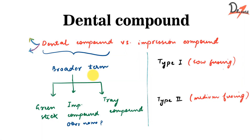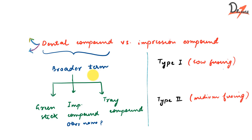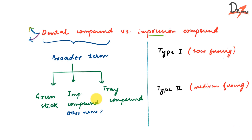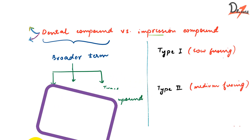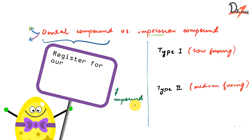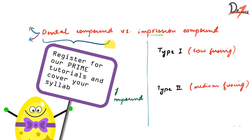Do you know what is dental compound and what is impression compound? Do you know the difference between them? Dental compound is a broader term - impression compound is a type of dental compound. Dental compound includes the green stick, the impression compound, and the tray compound.